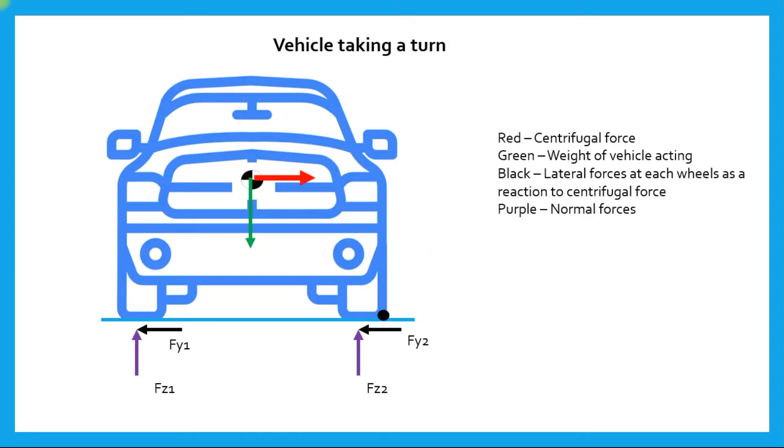This is the vehicle while turning. As we have seen earlier, there is the centrifugal force in red which is acting at the center of gravity. The weight is acting downwards shown in green and gives a reaction at the wheels in terms of the normal forces Fz1 and Fz2. Due to the cornering, there are lateral forces which are developed at the tire contact patch, Fy1 and Fy2.